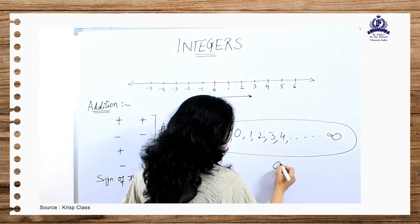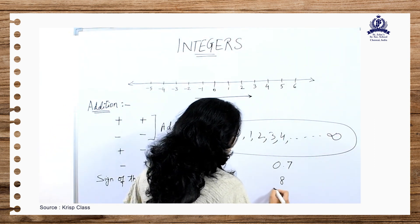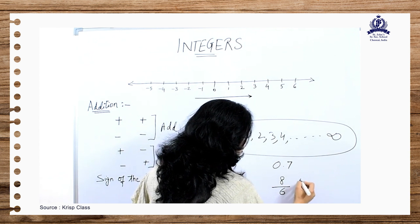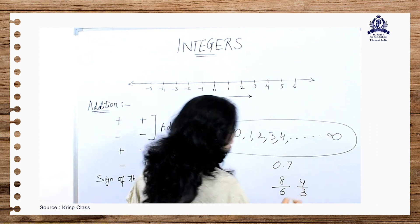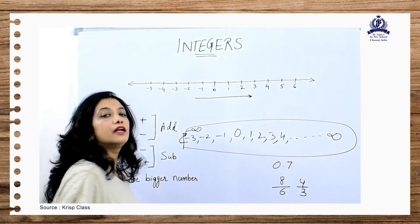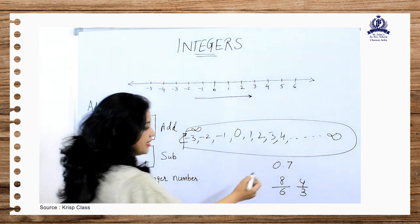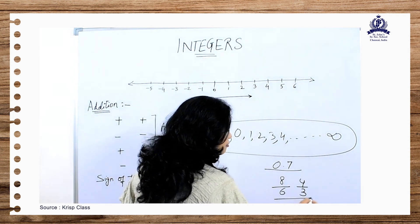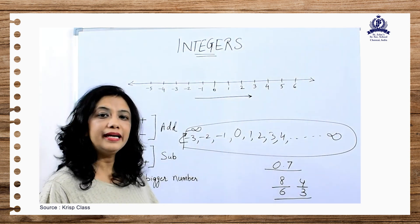See numbers like 0.7, 8 by 6, 4 by 3 - these numbers are not integers. Decimals as well as these fractions are not called integers.